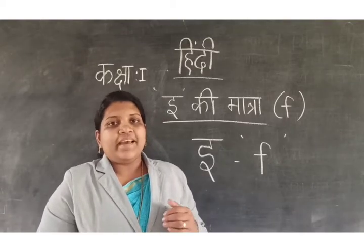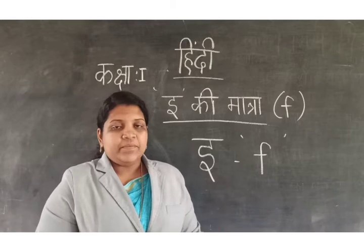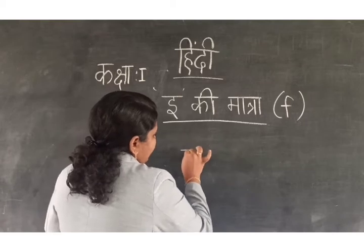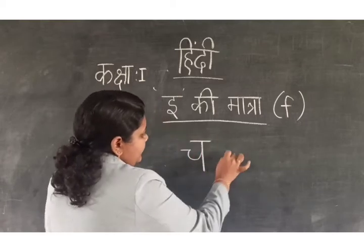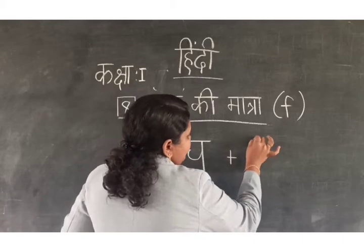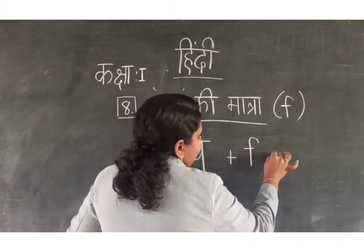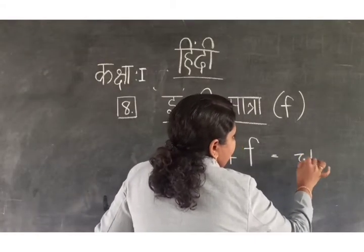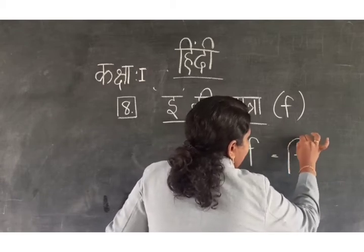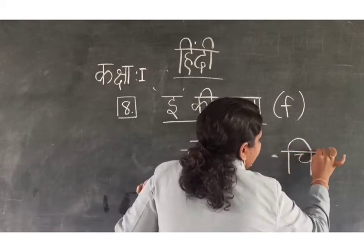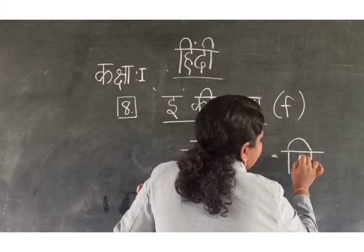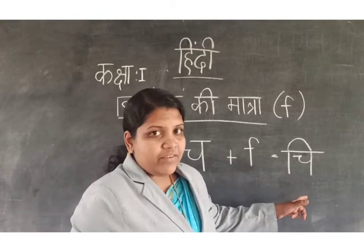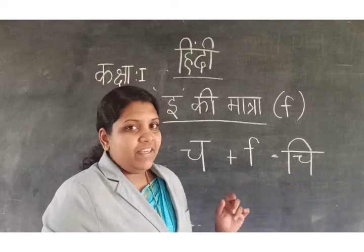So children, whenever we are adding this symbol to any letter, the letter should be like this. Here I am going to write the letter Cha. Cha plus the symbol of E — Ikki Matra. Which way will we write this one? First we will write the letter Cha, then we will write the symbol of the letter E on the left side. So, Cha plus Ikki Matra — we pronounce it as: Chi. Say with me: Chi.